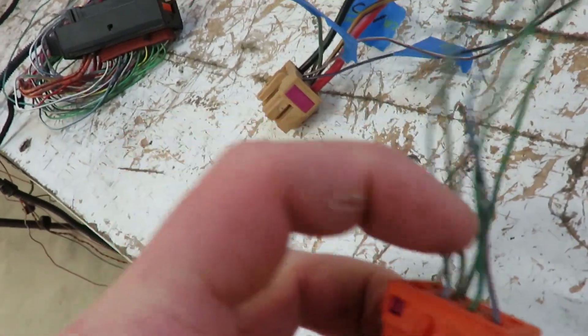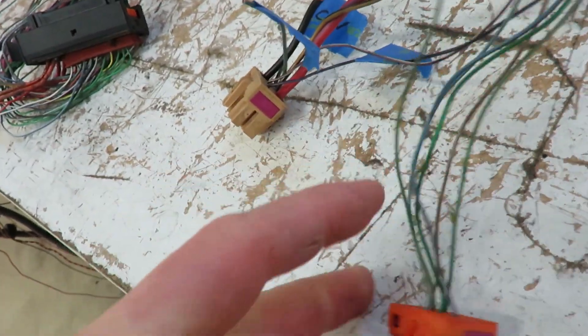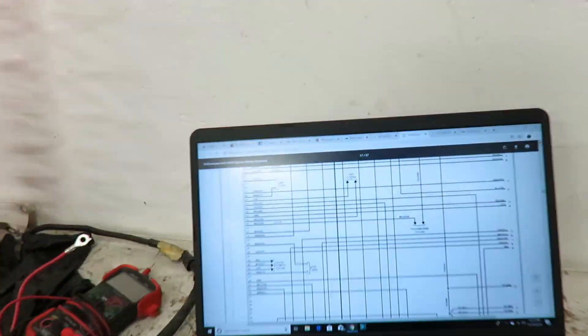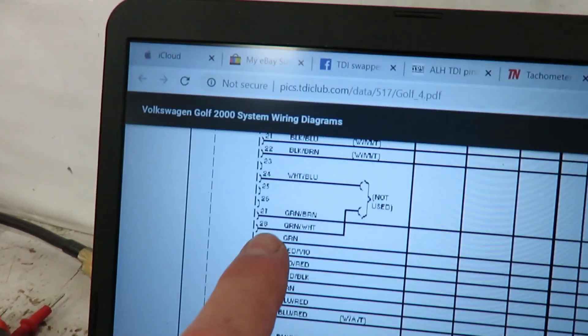And then just these other two. We'll trace those out real quick. Figure out what they're for. And you can even see here. So that green, white was pin 28.